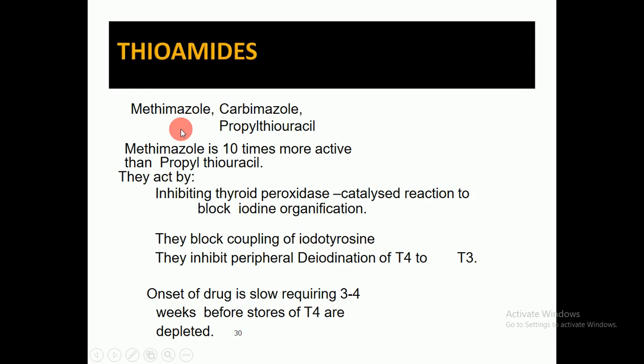Thioamides contain methimazole, carbimazole, and propylthiouracil. Methimazole is 10 times more active than propylthiouracil. Their main mechanism of action is to inhibit the thyroid peroxidase enzyme, blocking iodine organification and blocking the coupling of iodinated tyrosines. They also inhibit the peripheral deiodination of T4 to T3. The onset is slow, requiring three to four weeks before stores of T4 are depleted.